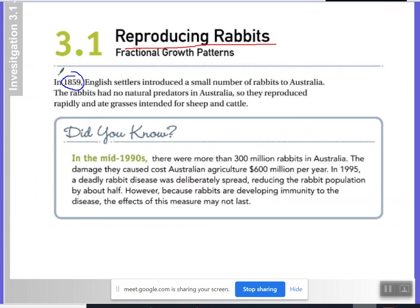In 1859, English settlers introduced a small number of rabbits to Australia. The rabbits had no natural predators in Australia, so they reproduced rapidly and ate grasses intended for sheep and cattle. Did you know that in the mid-1990s, there were more than 300 million rabbits in Australia? The damage they caused Australian agriculture was roughly $600 million per year. That's right. That is $2 million per rabbit.